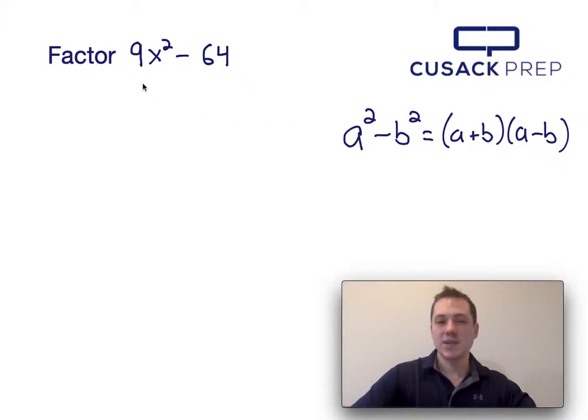Well, since a squared is 9x squared, and b squared is 64, I can determine what a and b are by taking the square root of 9x squared and taking the square root of 64.